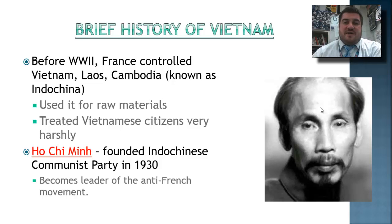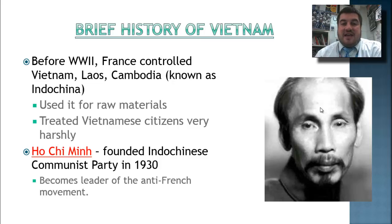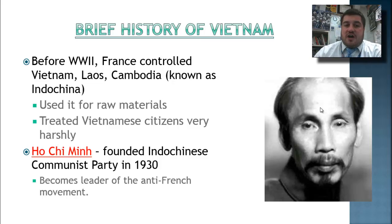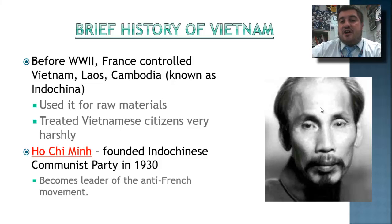A brief history of Vietnam: before World War II, it was colonized by France. France colonized all three of those countries — Vietnam, Laos, and Cambodia — and called it Indochina. They used it for raw materials, they imperialized it, and they treated the Vietnamese citizens very harshly, almost less than human, and the Vietnamese were not going to take it anymore.